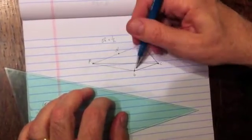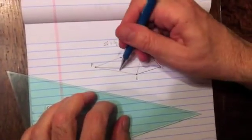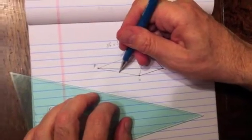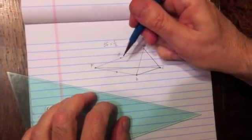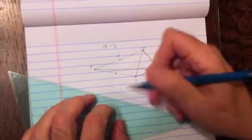B prime, again, is going to be halfway from B to P. And I'm just going to eyeball it there. It looks right. Now this is B prime.